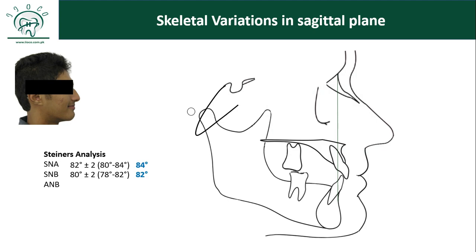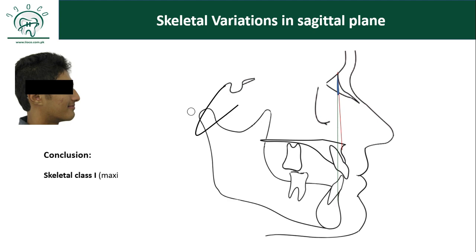One more important measurement is the difference between the NA line and NB line — the ANB angle. You don't actually have to measure this angle directly; if you subtract SNB from SNA you will get the result. In this patient, the difference between SNA and SNB is around 2 degrees (84 minus 82), which is in the normal range. The ANB angle tells you the actual discrepancy between the upper and lower jaw in the sagittal plane. How would you conclude? This patient has a skeletal Class 1 relationship because the maxilla and mandible are in a normal relationship in the sagittal plane — the ANB value is between 0 and 4 degrees.